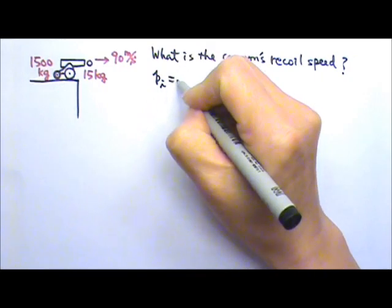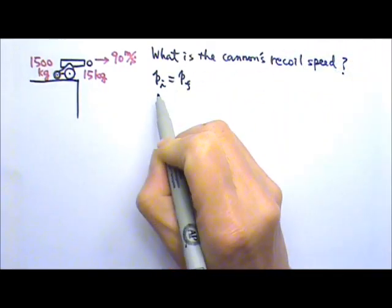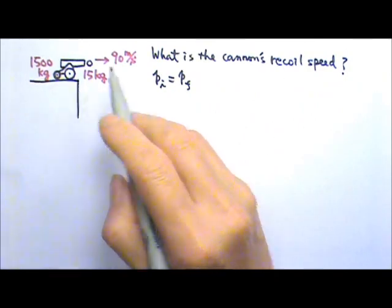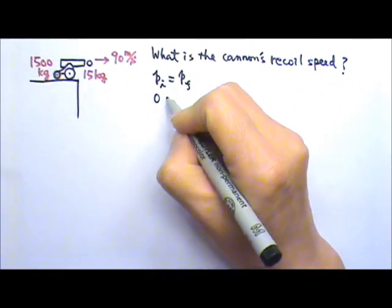The initial momentum equals the final momentum. Before the cannonball is shot, the whole system is at rest, so the initial momentum is zero.